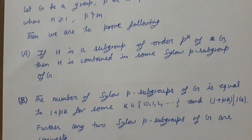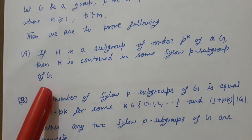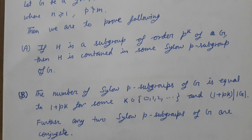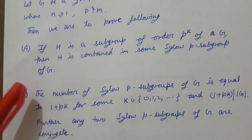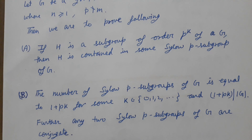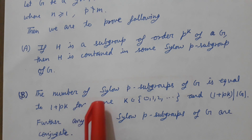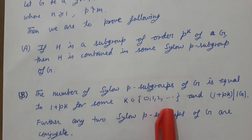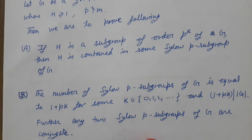We have to prove two points, A and B: A is Sylow's second theorem and B is Sylow's third theorem. Part A states: if H is a subgroup of order p^k of G, then H is contained in some Sylow p-subgroup of G. Sylow's second theorem says the number of Sylow p-subgroups of G equals 1 + pk for some whole number k, and 1 + pk divides the order of G. Further, any two Sylow p-subgroups of G are conjugate.